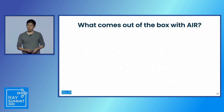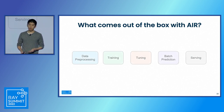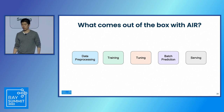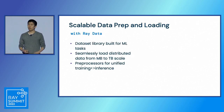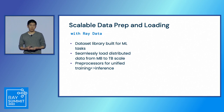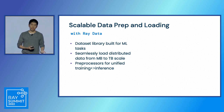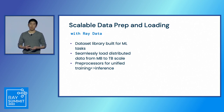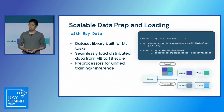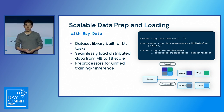So what comes out of the box with Air? Air has high-level modules for data processing, training, tuning, batch prediction, and serving. We have scalable data preparation and loading with Ray Data — a dataset library built specifically for machine learning. It lets you distribute data from megabyte scale to terabyte scale and allows you to build training pipelines with a preprocessor abstraction. So you can create a dataset from data, create a preprocessor, and set up a distributed training pipeline.